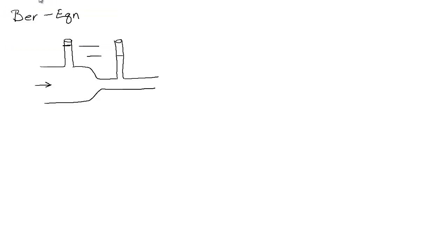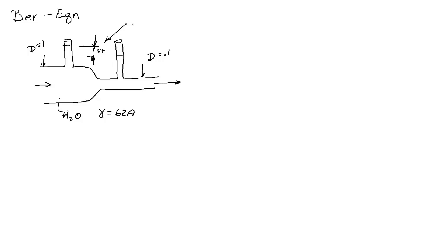Let's say we had a problem like this: water going through a pipe. This happens to be one foot, say the diameter here is one and the diameter here is 0.1. We want to know, given that this is one foot apart, what's the flow rate Q, which is AV — in cubic feet per second — a volumetric flow rate.